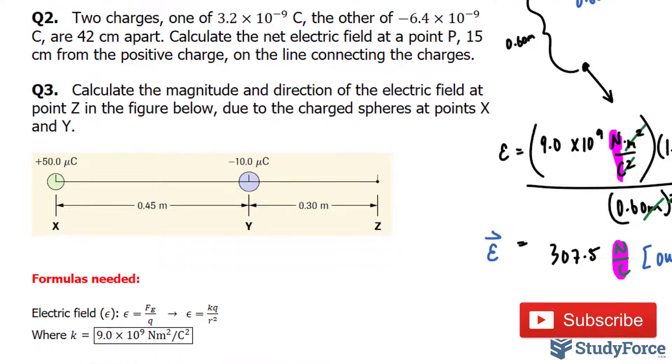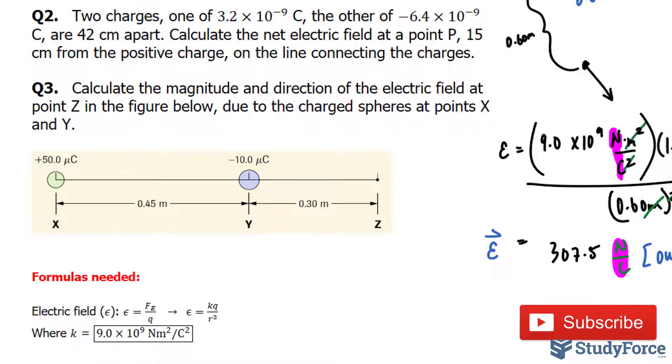Now, let's move on to question number two. Two charges, one of 3.2 times 10 to the power of negative 9 coulombs, and the other of negative 6.4 times 10 to the power of negative 9 coulombs, are 42 centimeters apart. Calculate the net electric field at a point P, 15 centimeters from the positive charge on the line connecting the charges.